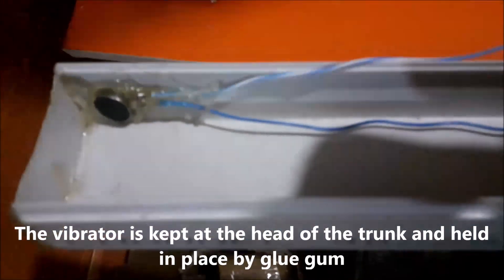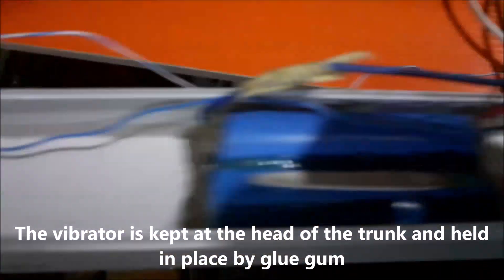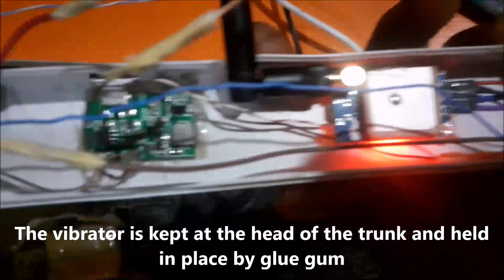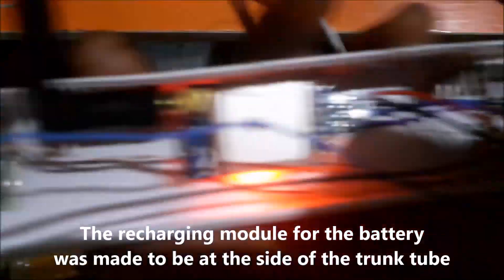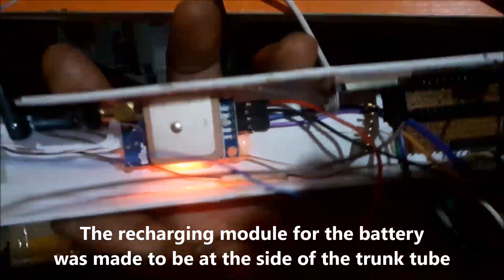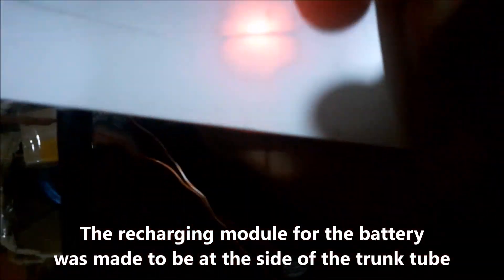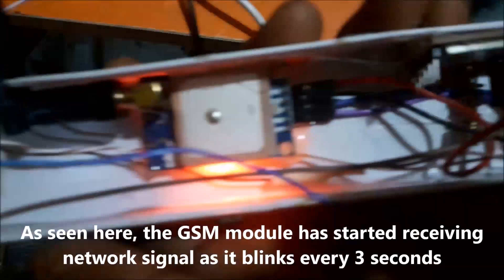The vibrator is kept at the head of the trunk and held in place by glue gun. The recharging module for the battery was made to be at the side of the trunk tube, so that it can be easy to connect the solar panel to it to recharge the batteries.